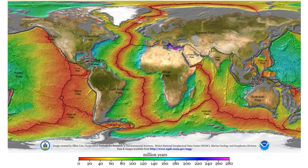The mantle is mainly composed of silicates, and the boundaries between layers of the mantle are consistent with phase transitions. The mantle acts as a solid for seismic waves, but under high pressures and temperatures it deforms so that over millions of years it acts like a liquid. This makes plate tectonics possible.